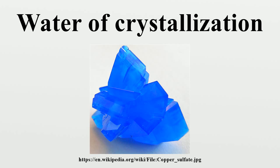Consider the case of nickel chloride hexahydrate, with formula NiCl2·6H2O. Crystallographic analysis reveals that the solid consists of trans-NiCl2(H2O)4 subunits that are hydrogen bonded to each other as well as two additional molecules of H2O. Thus one-third of the water molecules in the crystal are not directly bonded to Ni2+, and these might be termed water of crystallization.